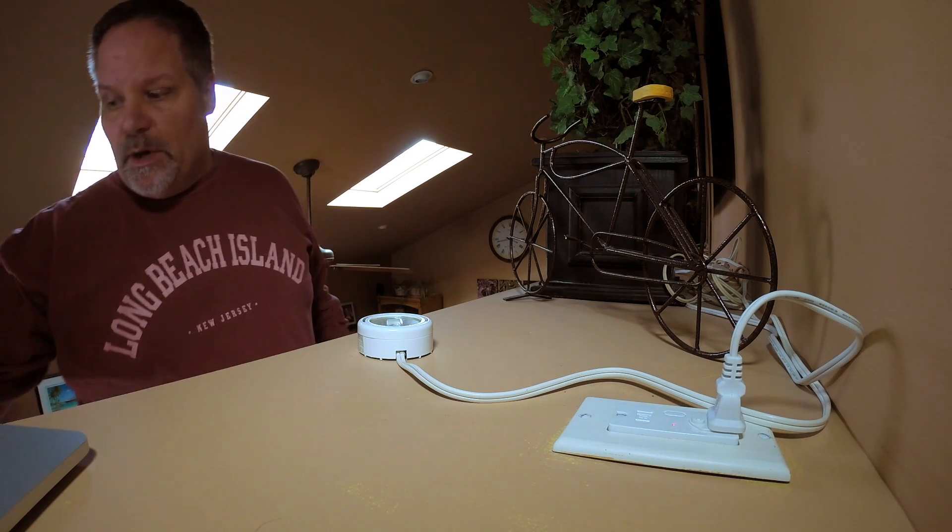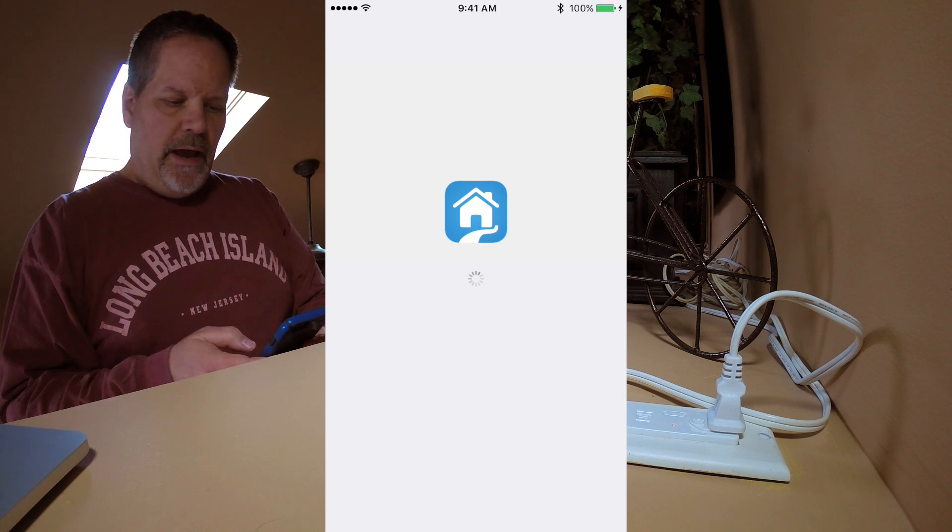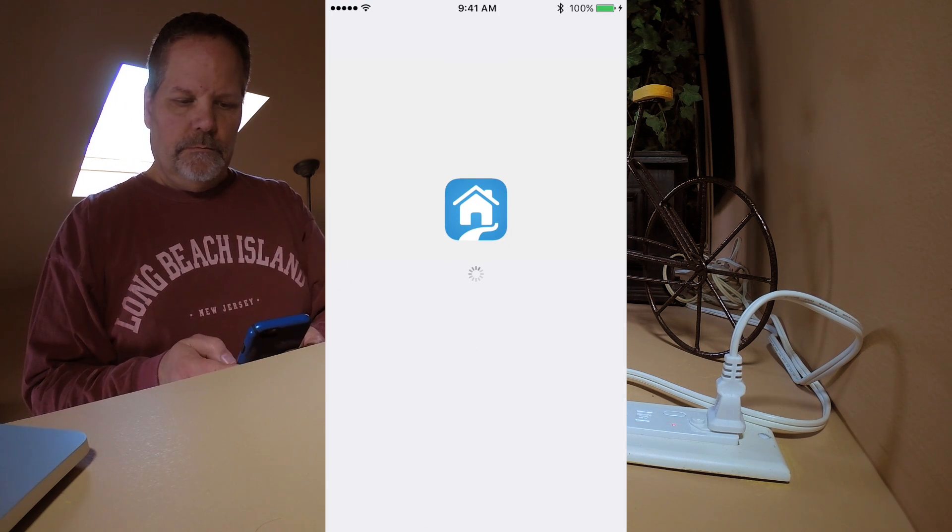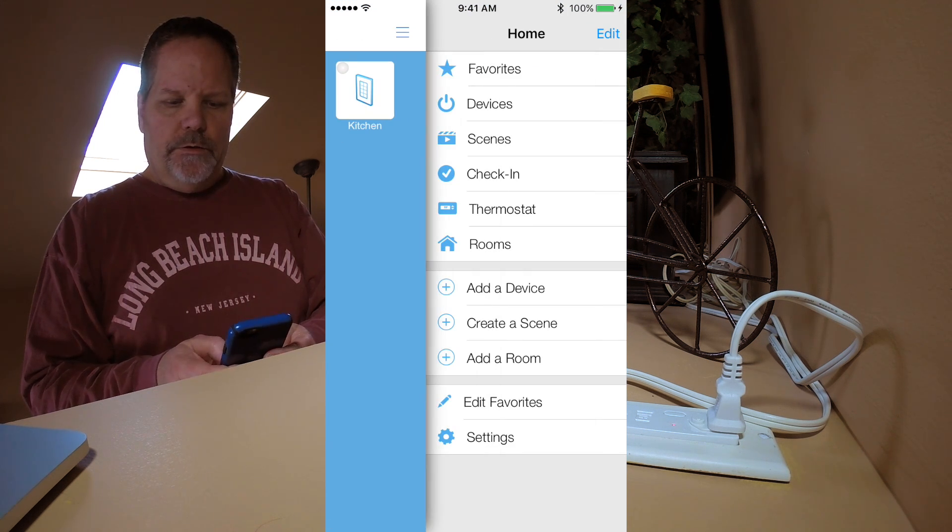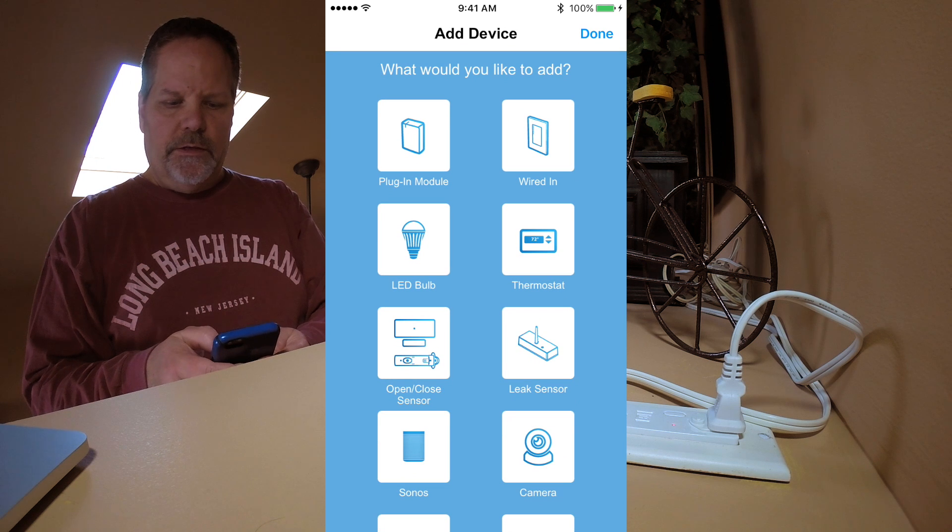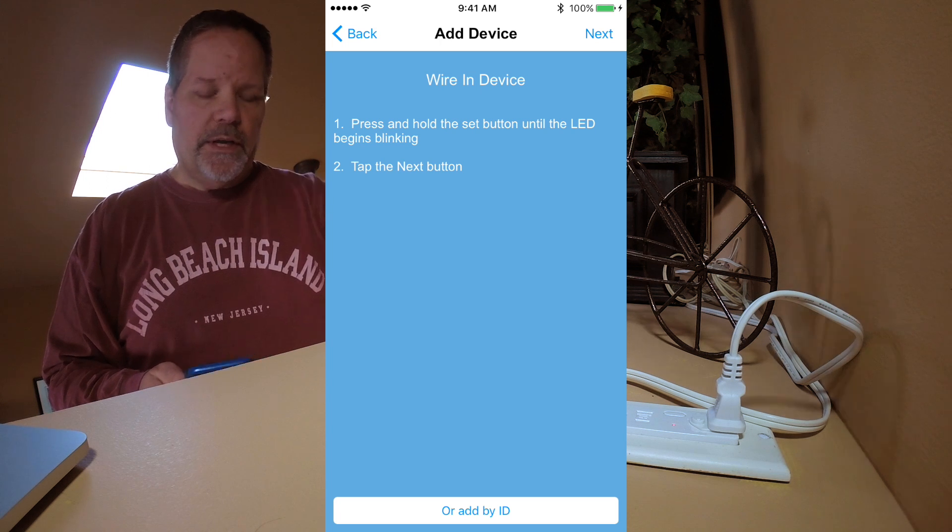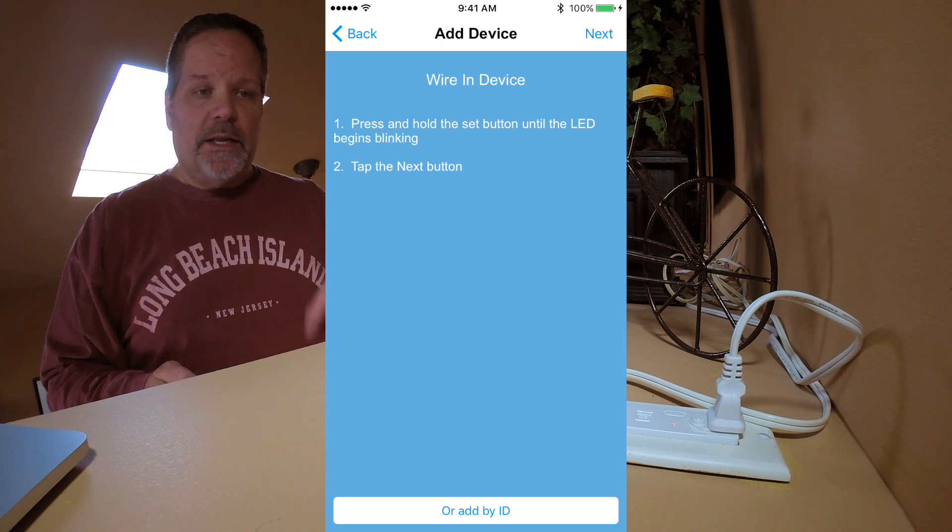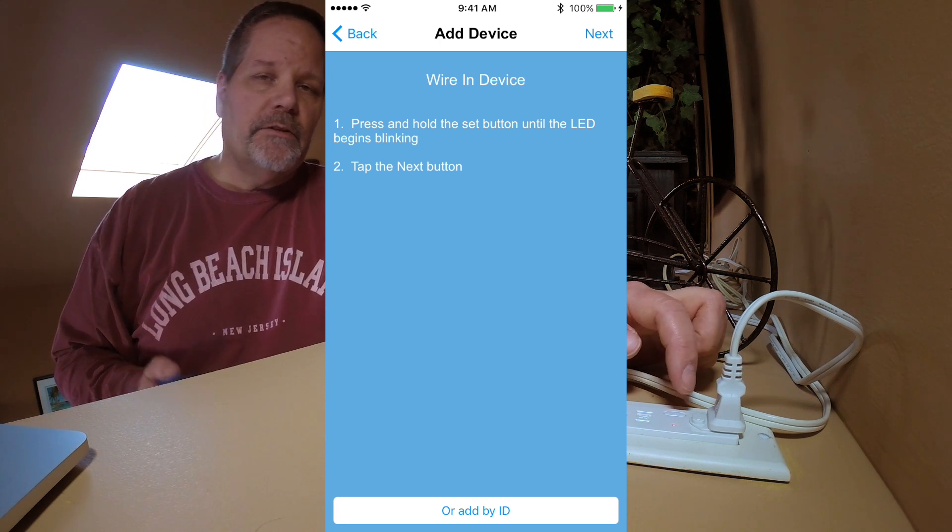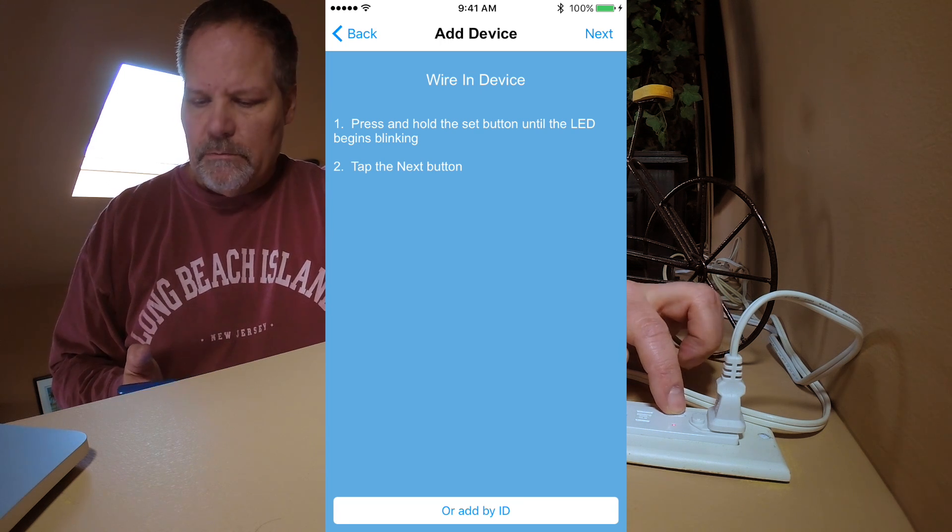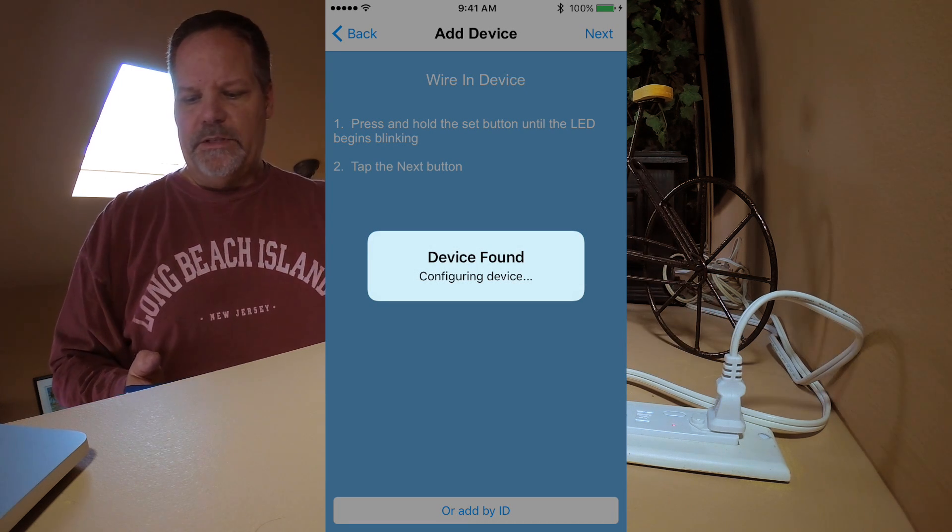Now I just have to define it to my hub. I'm going into the Insteon app. And I'm going to say add a device. It is a wired in device. Now because I have access to it, I can push and hold the button, or I can add it by the ID. There is an ID, that six character ID, that is on every one of the Insteon devices. I could have used that. But I'm here.